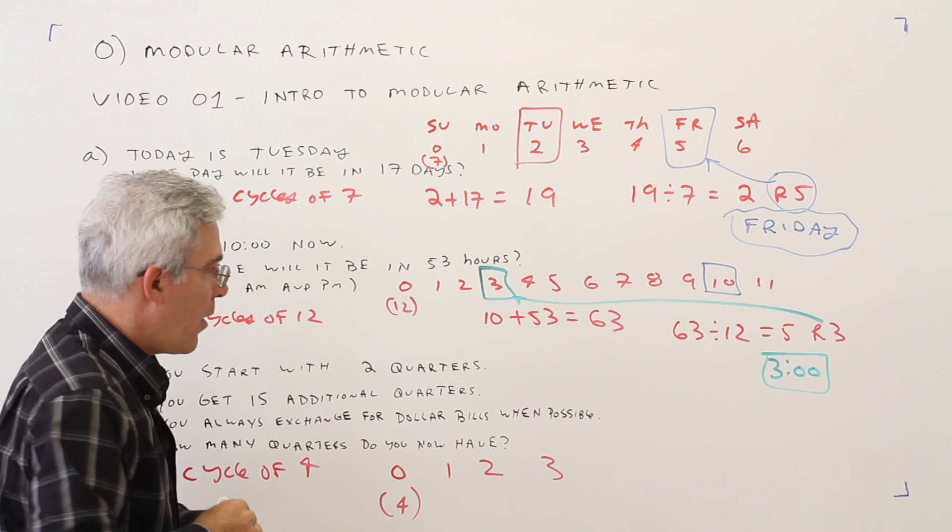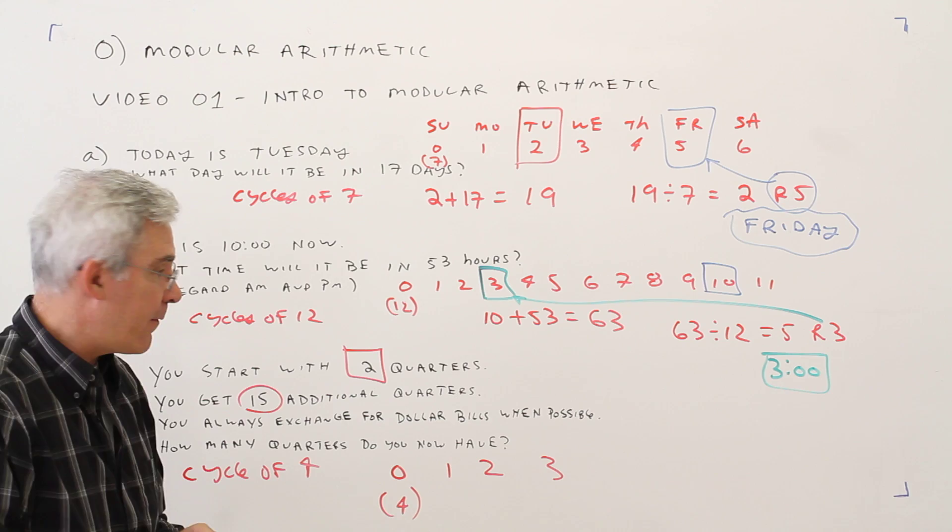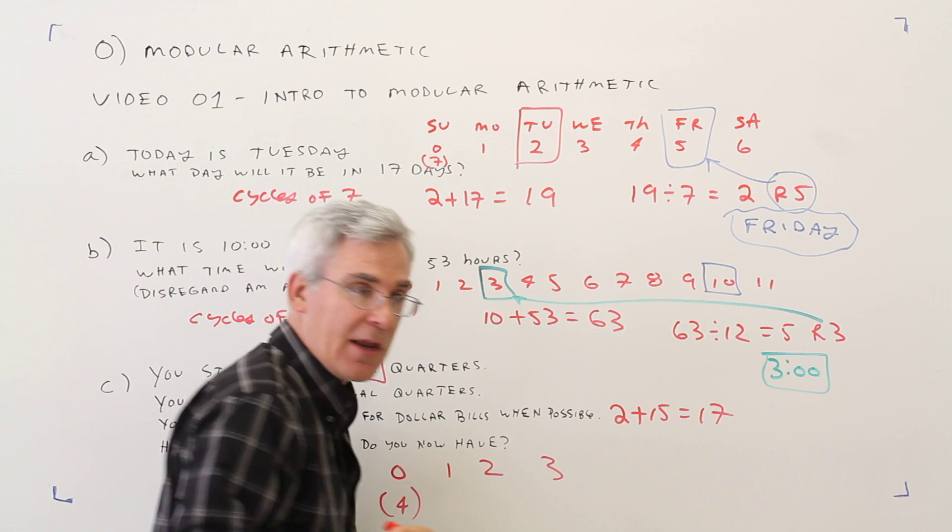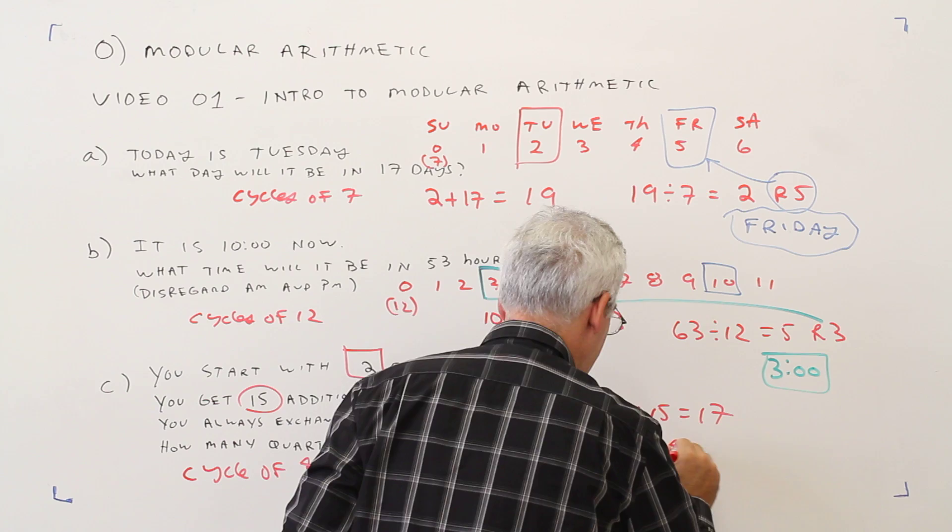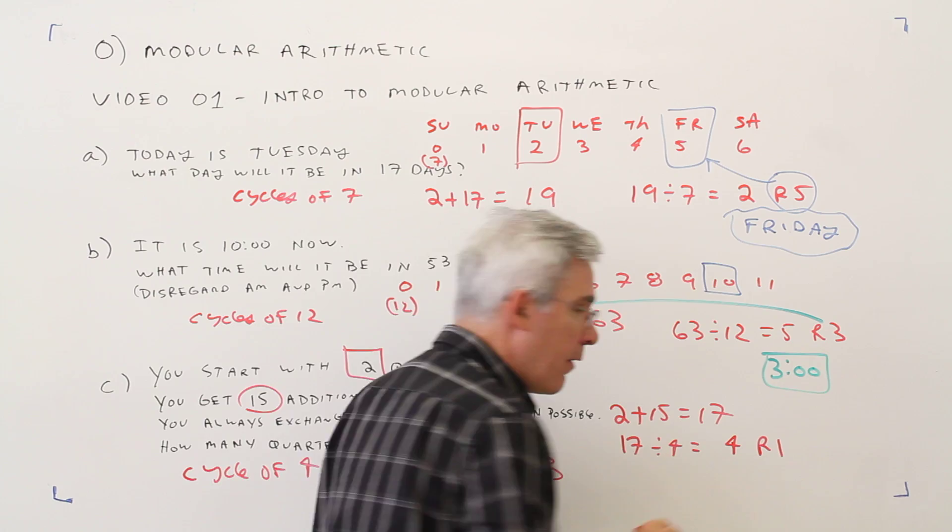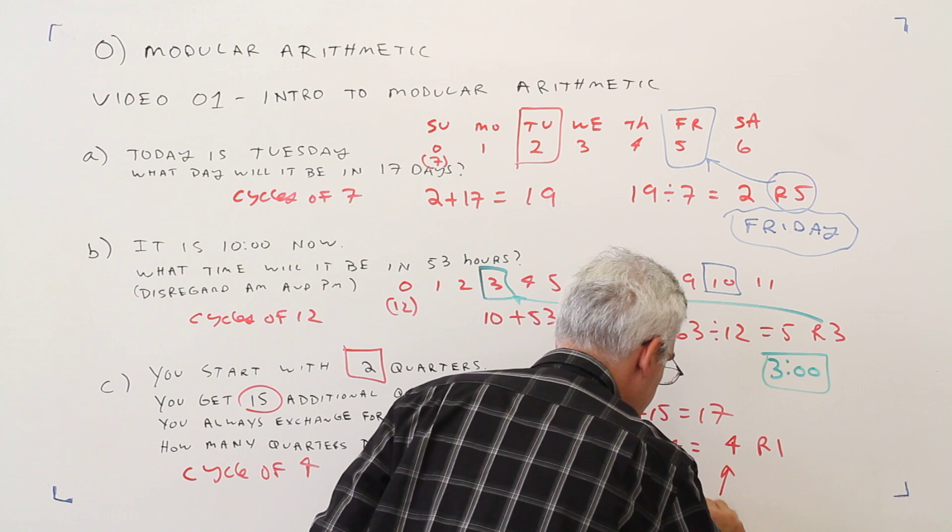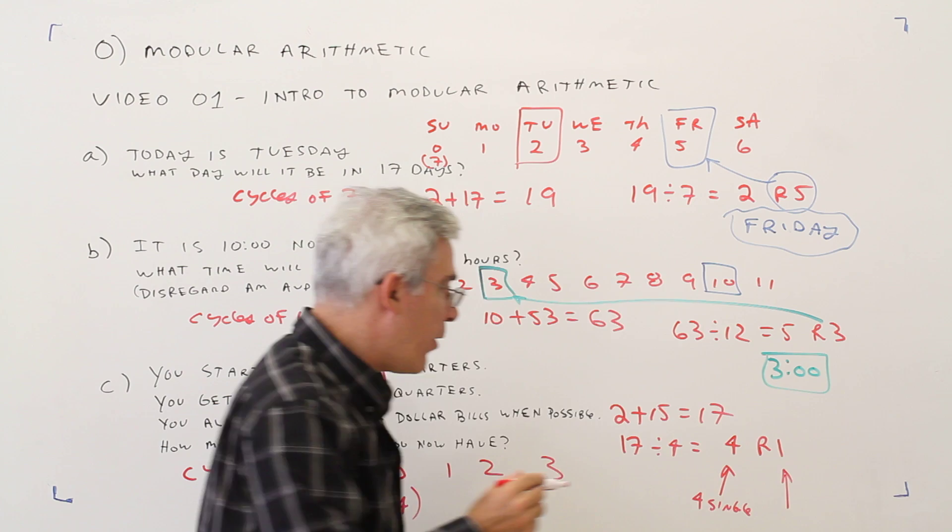Okay, so again, here's where we're starting. And we're adding 15. So it's going to be 2 plus 15 is 17. We will divide by 4. 17 divided by 4. And that's 4 remainder 1. So in this case, this 4 represents, you're going to have 4 dollar bills. And this remainder 1 is going to be, you're going to have 1 quarter.